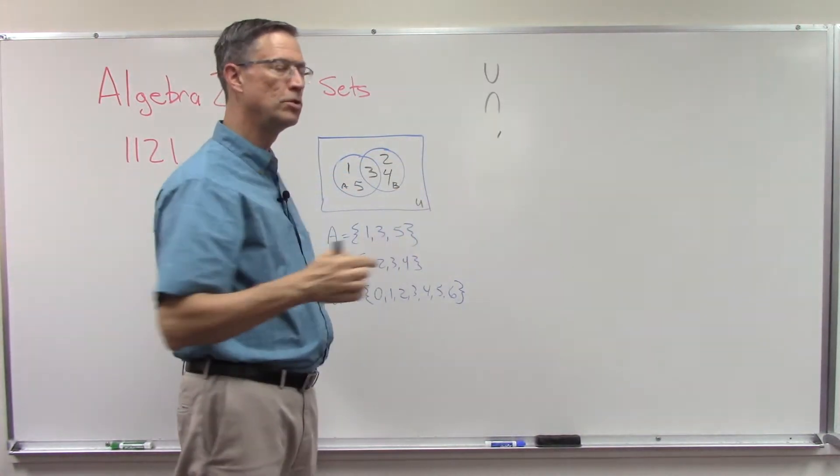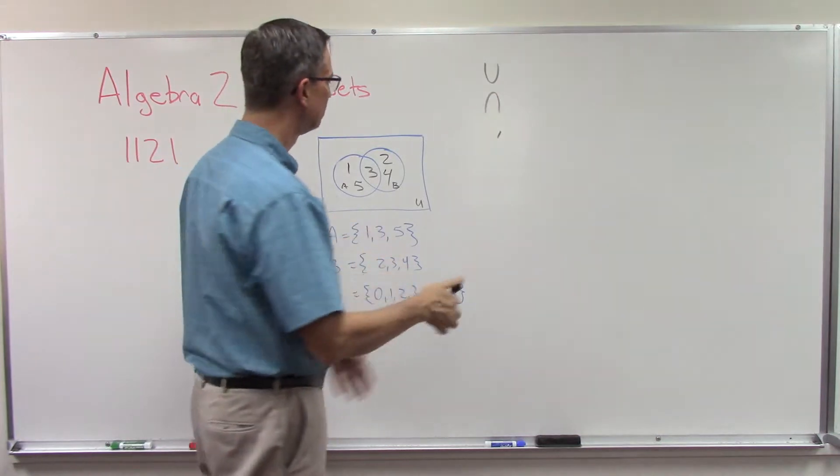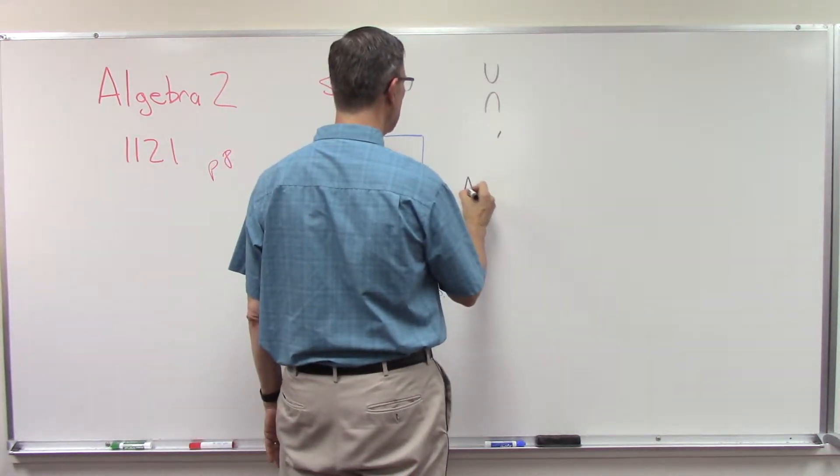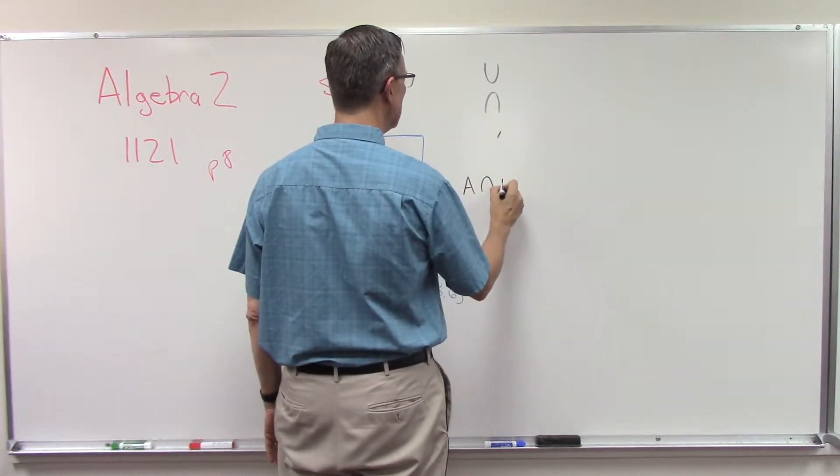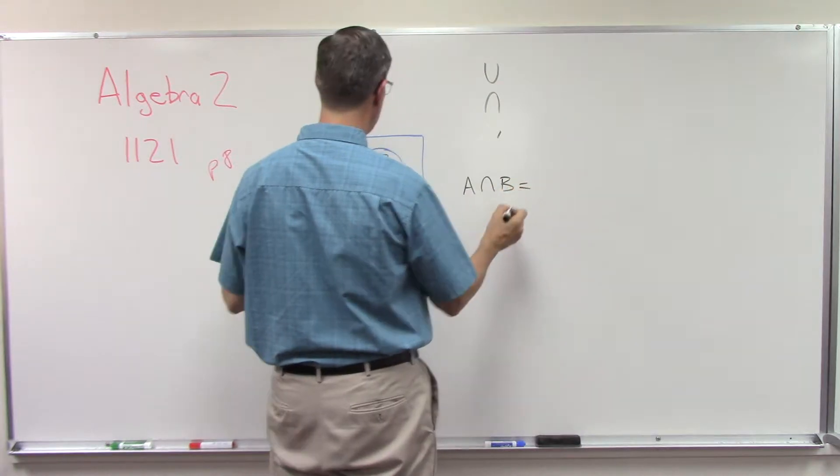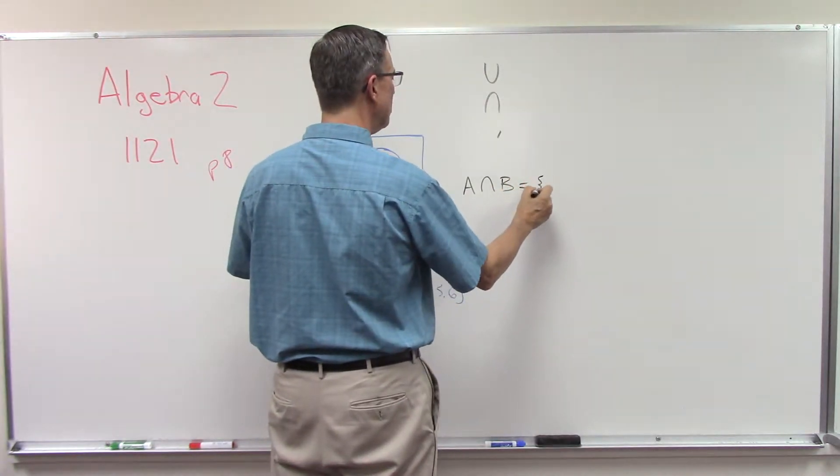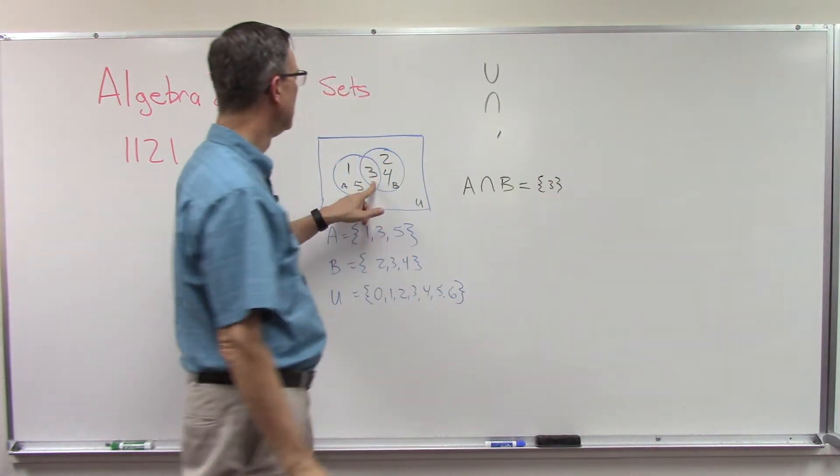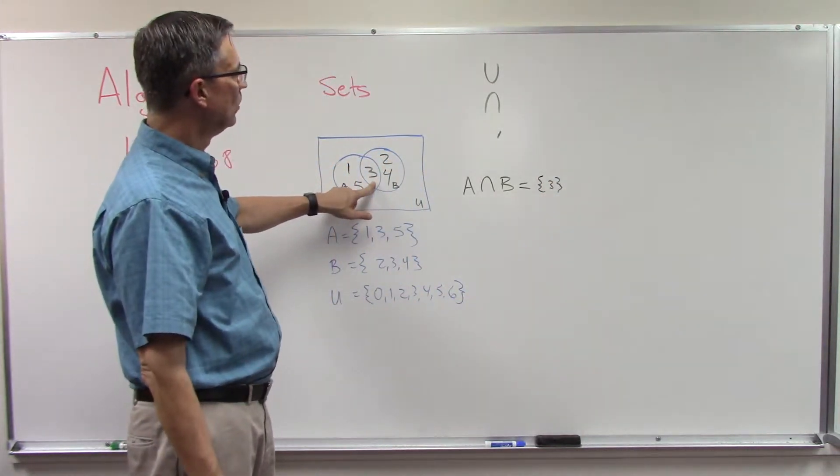So A intersected with B means it is just the number three, that's the set three, alright. It's the only thing in the intersection.